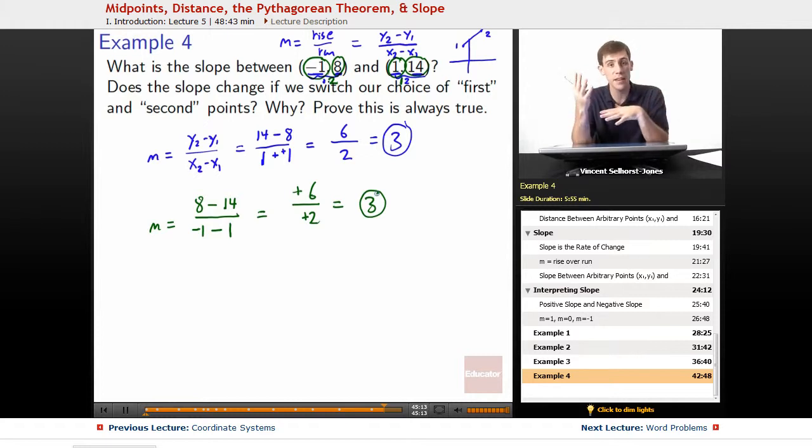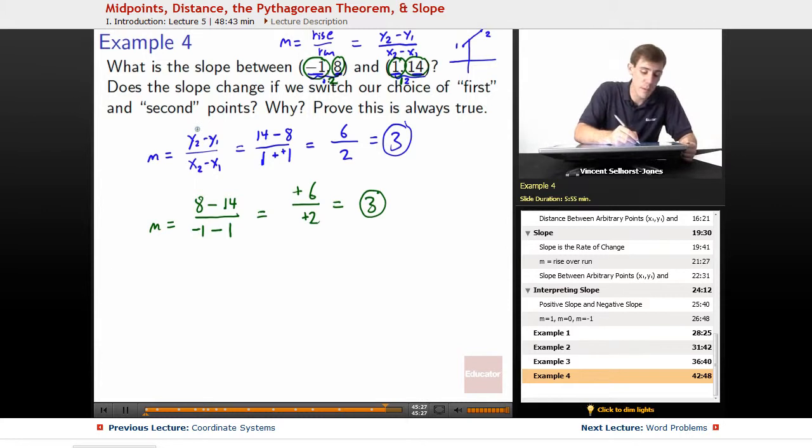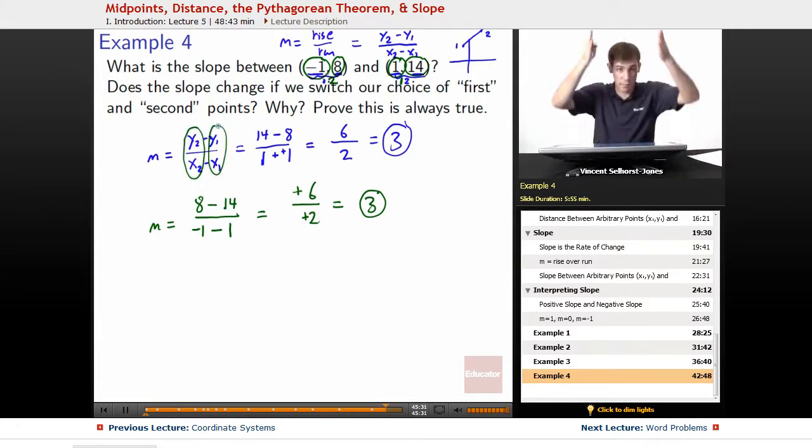If we have negatives showing up because of the switch, they're going to show up on both the top and the bottom, so we'll always see cancellation. It doesn't matter who gets to be called first and second as long as we match up our seconds and our firsts have to match up vertically.